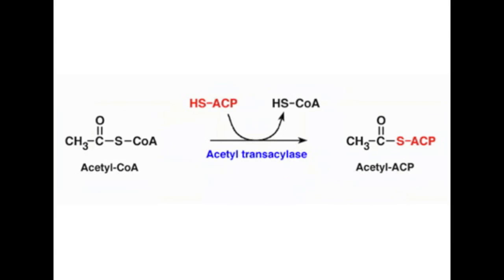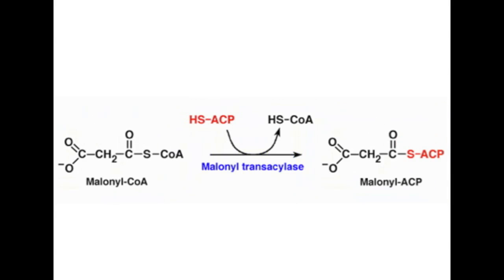Alternatively, acetyl-CoA can be converted into acetyl-ACP by having its acetyl group transferred from CoA to ACP. This reaction doesn't require any energy input. Malonyl-CoA can also be converted to malonyl-ACP by having its malonyl group transferred from CoA to ACP. This reaction also doesn't require the input of any ATP.